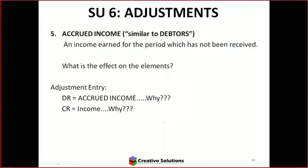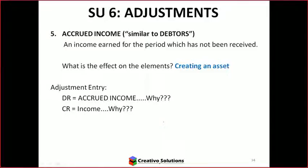Accrued income — what is this? Is it also a liability? Accrued means it's still owing. It's income that you've earned for the period which has not been received. So it's an asset. Why? Because it's something you still haven't received — a resource you're entitled to. You've rendered the service, you've given the product, and that creates an obligation for your customer — your debtor. Accrued income is similar to debtors.